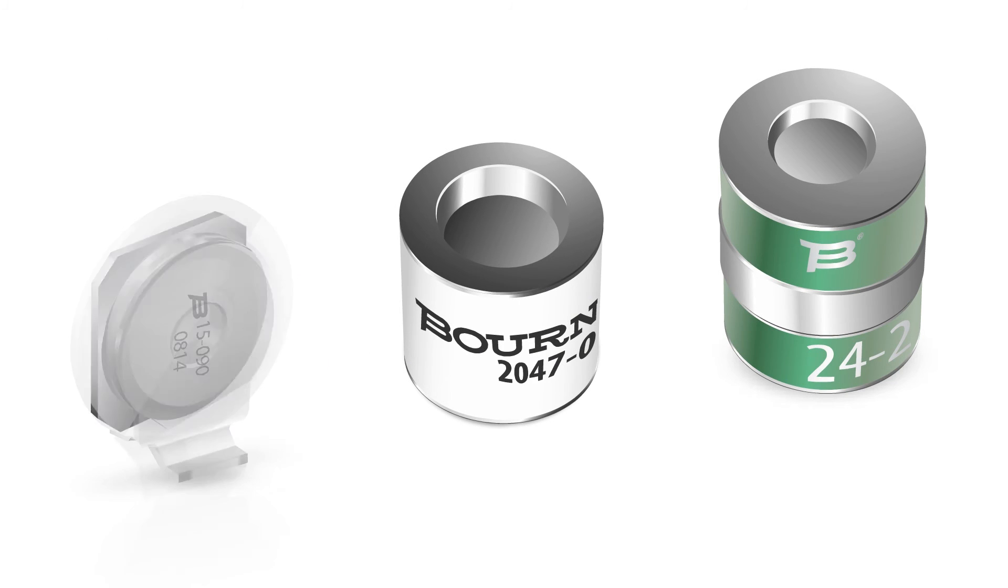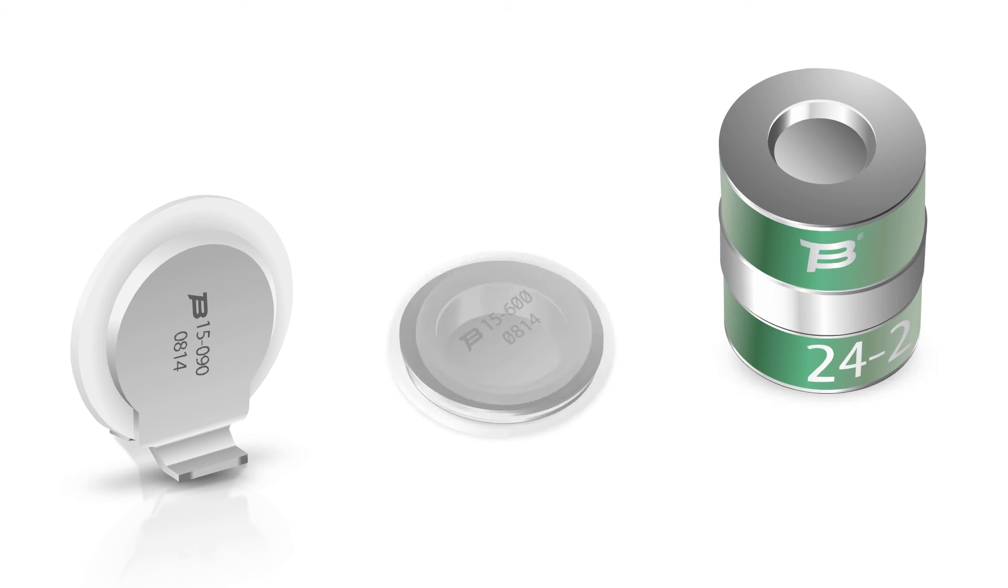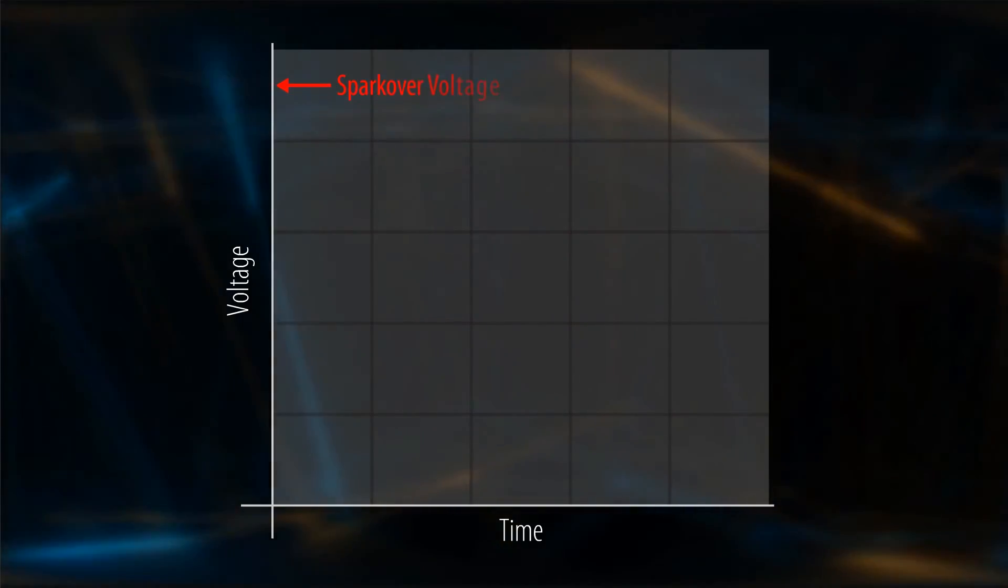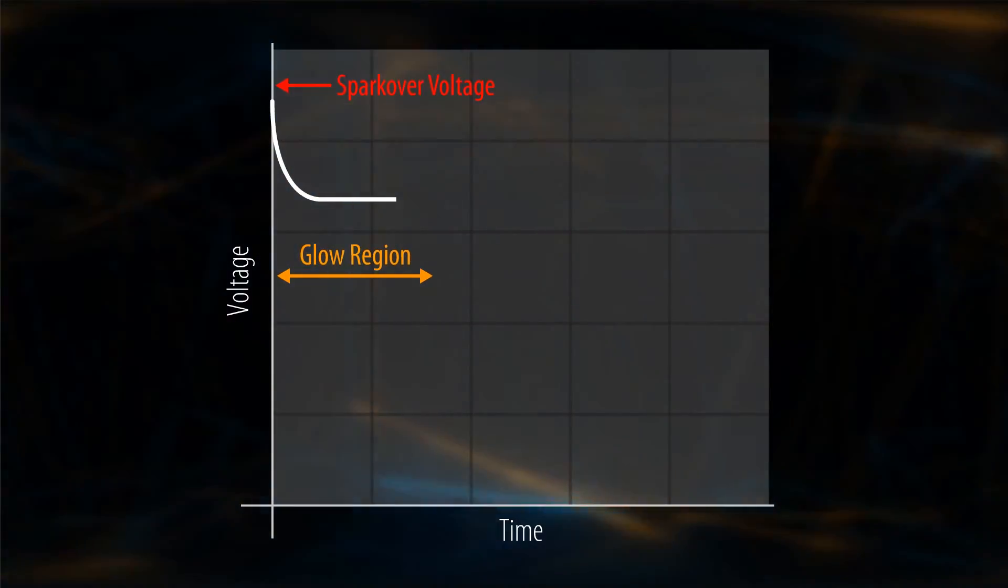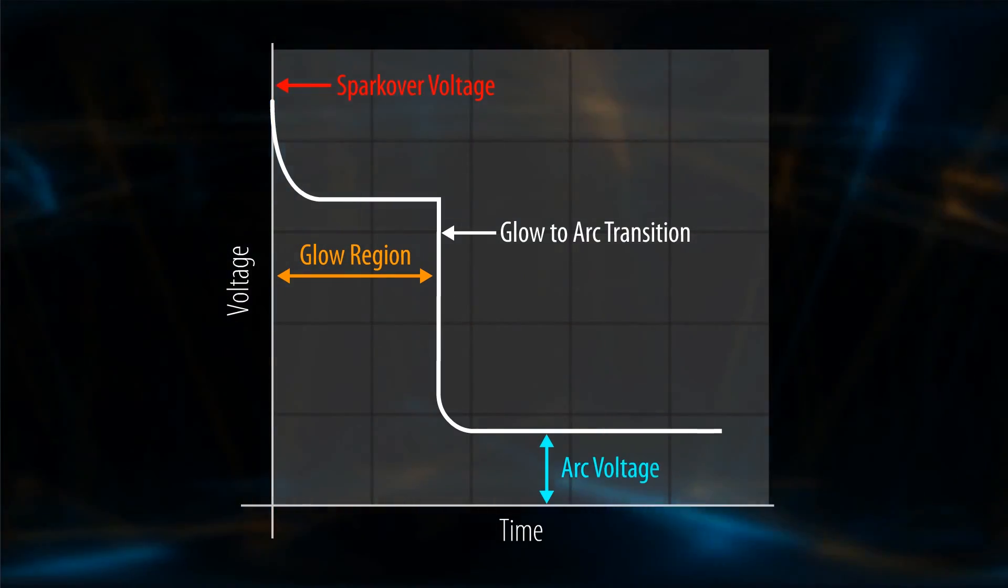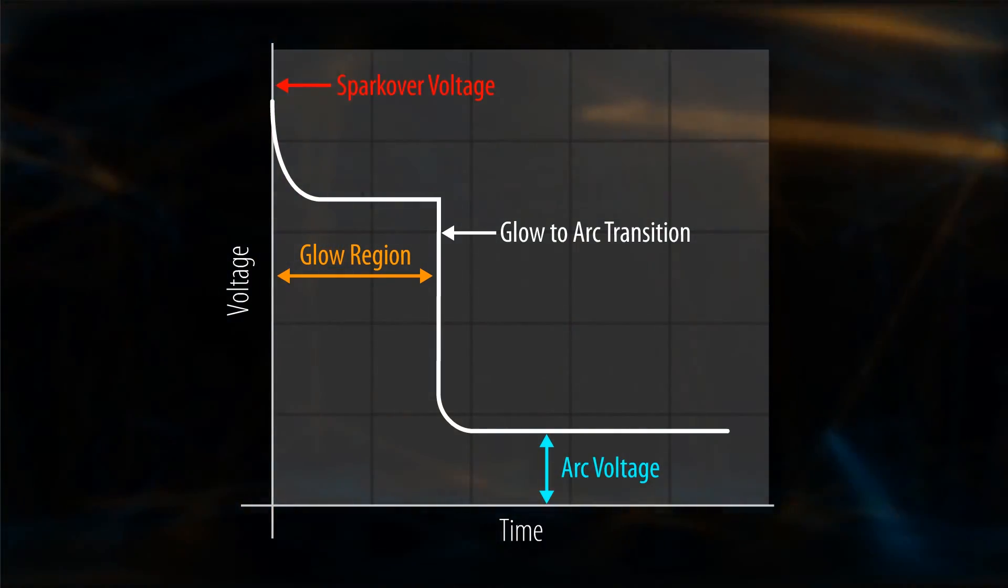Solving their space limitation issues, Bourns effectively squeezed its GDT with flat technology design by as much as 75%. GDTs with flat technology still deliver robust over-voltage protection and superior surge handling capabilities and do not impact signal or system operation.